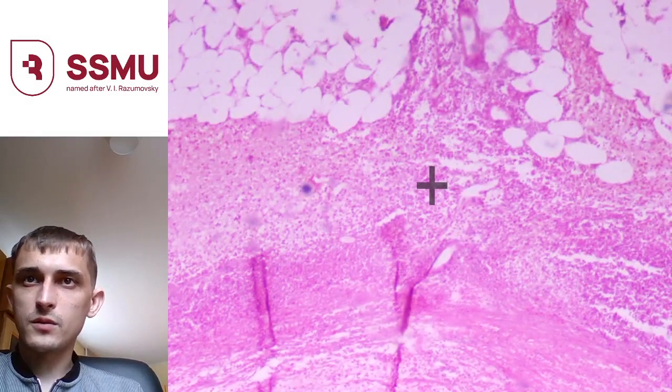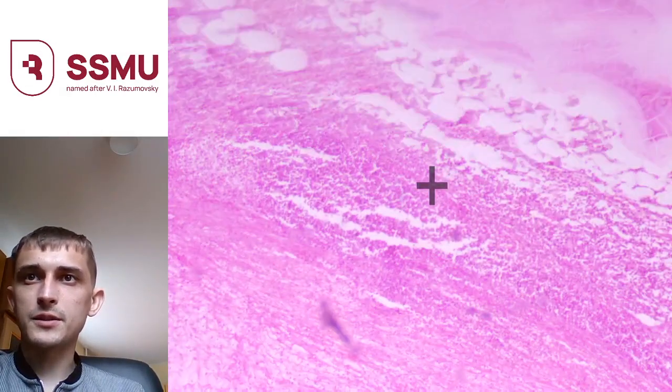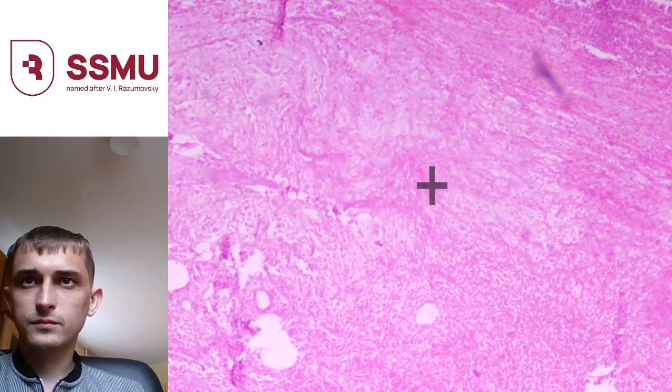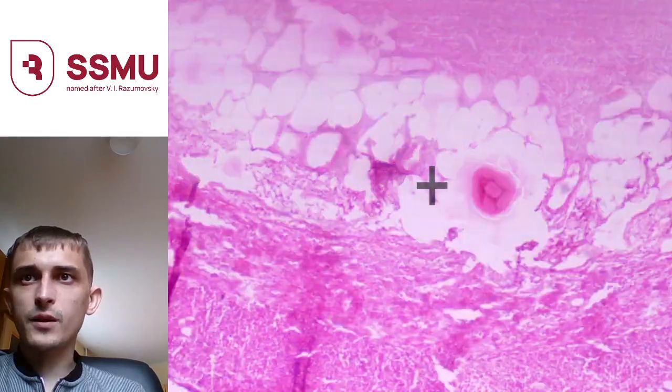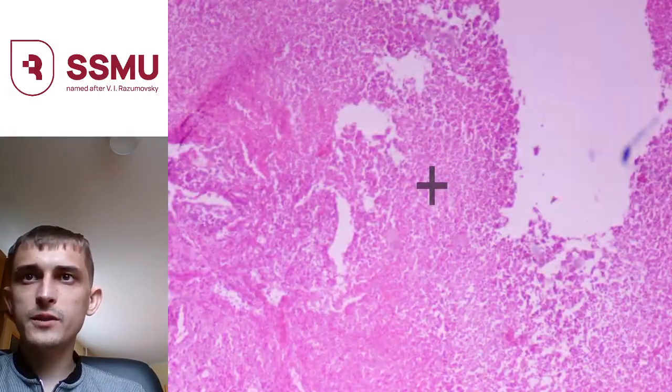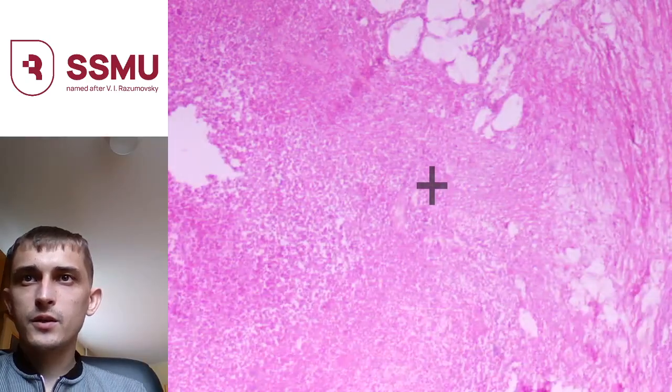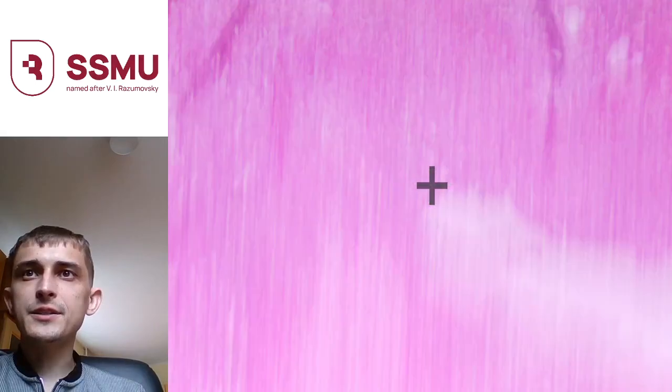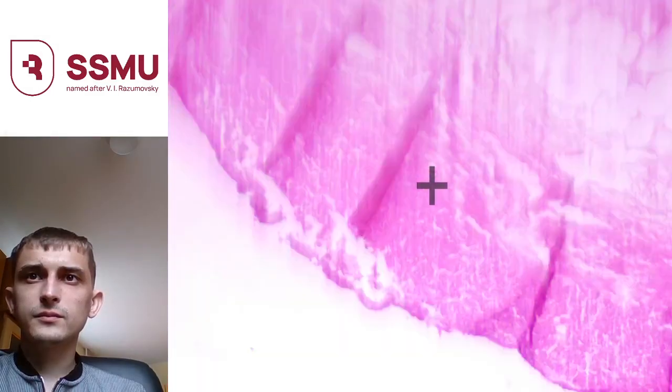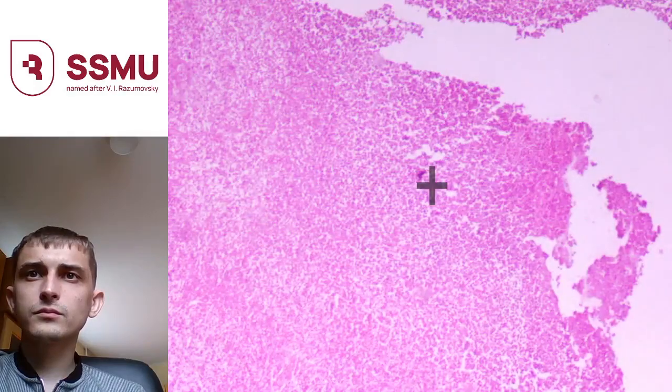Please check yourself with the light microscope. Let's watch one more and go ahead, since this slide is easy to detect. Again we see the wall of an organ with diffuse lymphocytic infiltration — there are no glands here as they were destroyed in the inflammatory process. A different slide, but it looks the same.